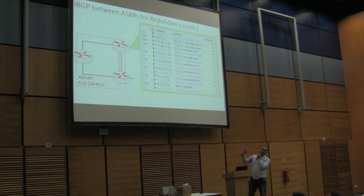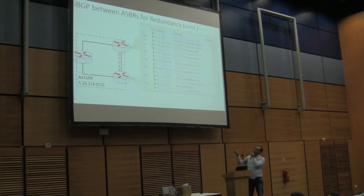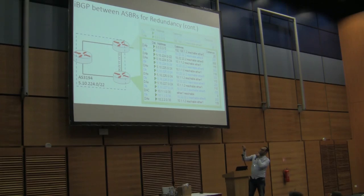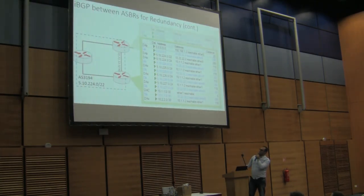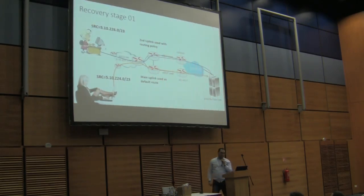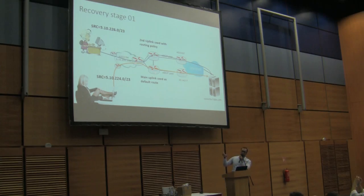What we get at the other end: one main default route is active and another is in standby mode, and all other routes also have one active and one backup. At the other end, we have the same scenario — the default route is available to the direct peer and another through our peers. Now I'm going to connect to my device and show exactly what happens: first without this inter-ASBR link, then with the iBGP ASBR link implemented, to see how fast the switchover is.